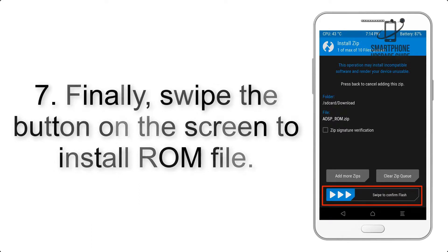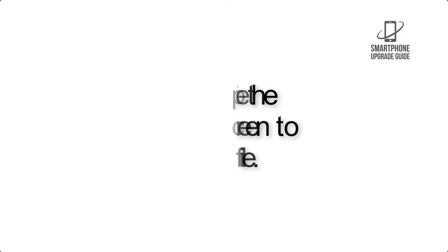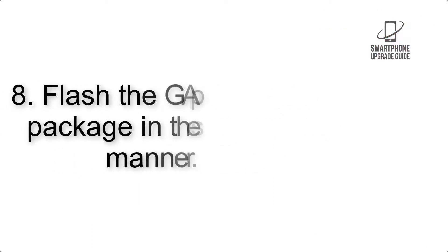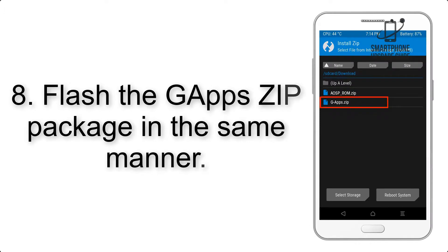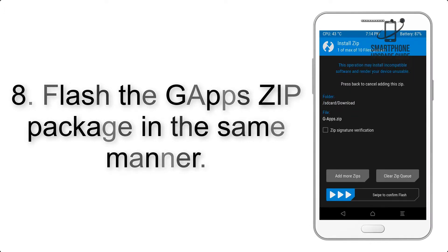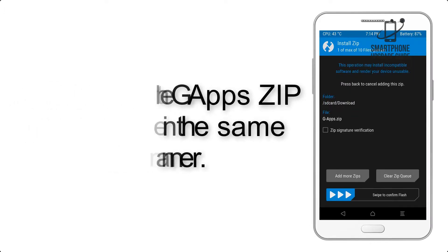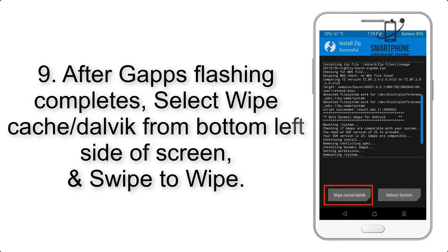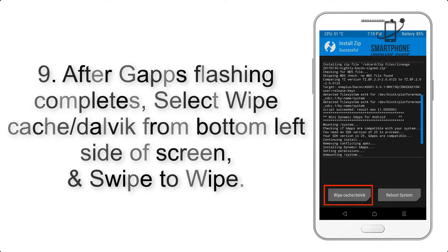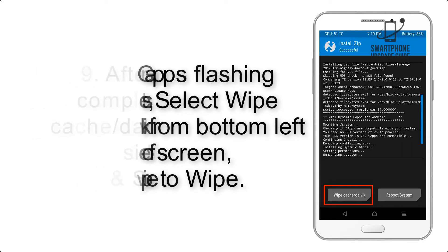Step 8: Flash the GApps zip package in the same manner. Step 9: After GApps flashing completes, select Wipe Cache and Dalvik from the bottom left side of the screen and swipe to wipe.